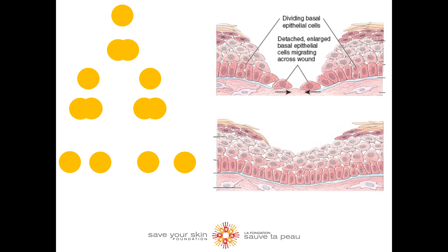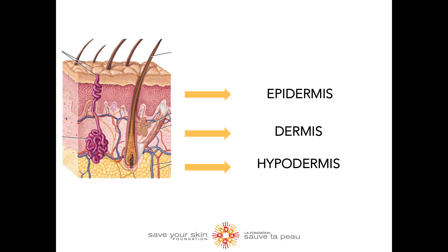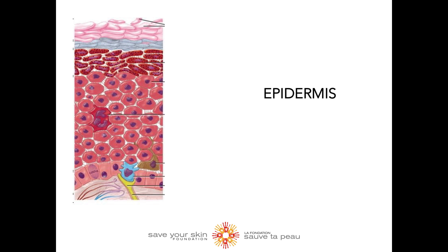Now let's look into more detail at the different layers of the skin. The skin has three layers: we have the upper layer called the epidermis, the middle layer called the dermis, and the bottom layer called the hypodermis. We are mainly going to focus on the epidermis and the different cells within this layer, but I won't go into detail on each sub-layer.